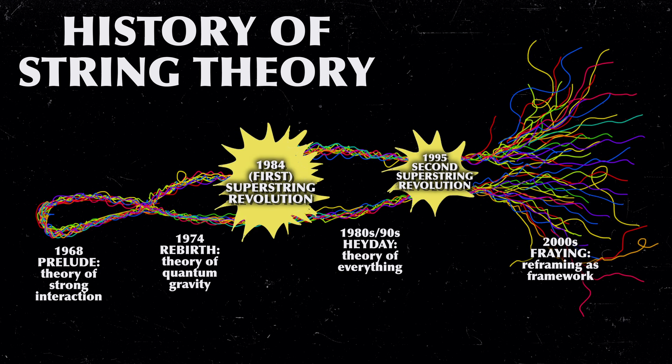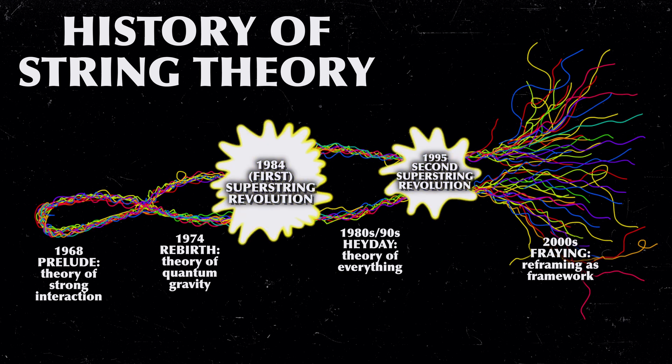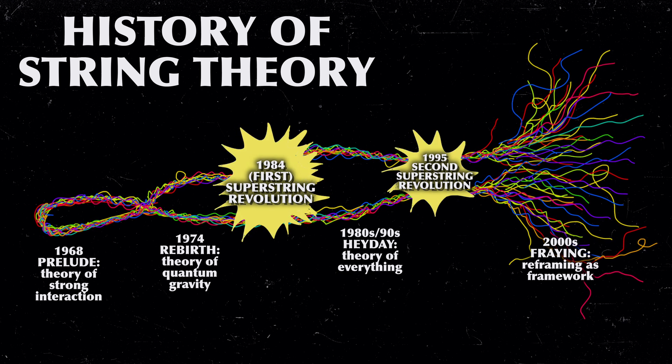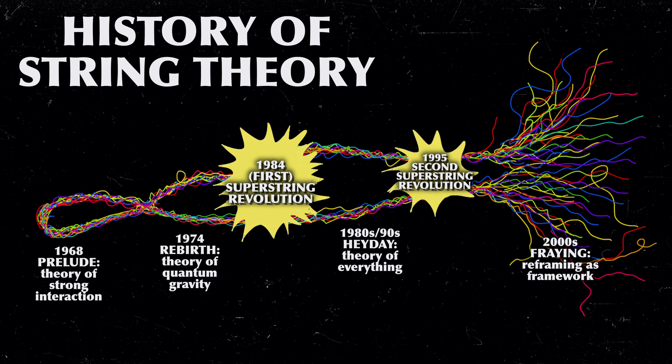Today, string theory is seen more as a framework of mathematics that originated in the earlier string theories and is now applied to other fields in math and physics. And this concludes the history of string theory. In the next video, I will look more into the meaning behind the theory, the criticisms of it, and whether the current period of cooling down really means that string theory has failed.